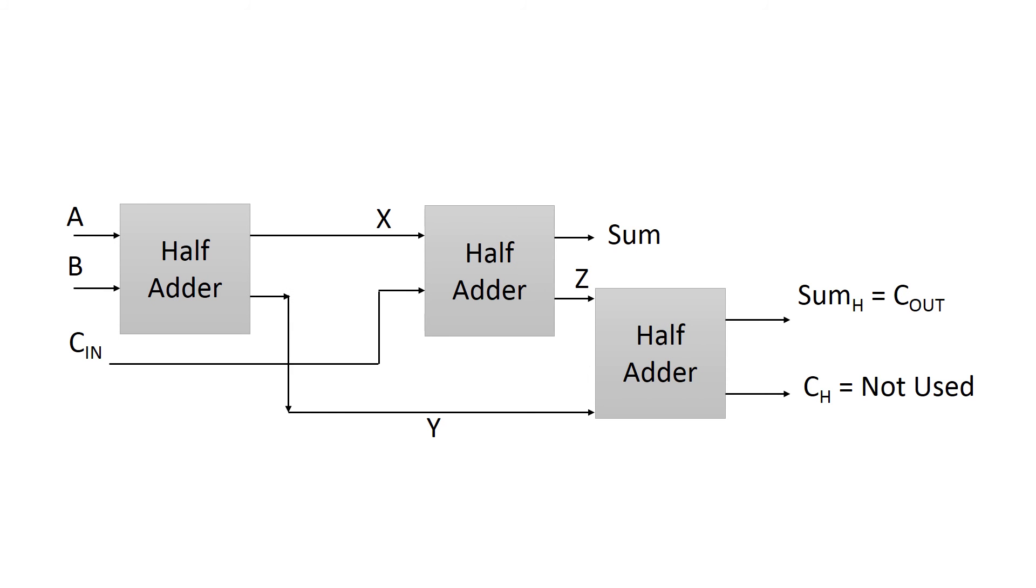We know that the sum of half adder is the XOR of its input. Therefore, OR gate can be replaced by half adder. Its sum output will be the final carry out that is C out and carry out CH is neglected.